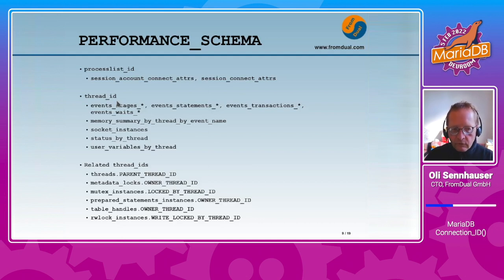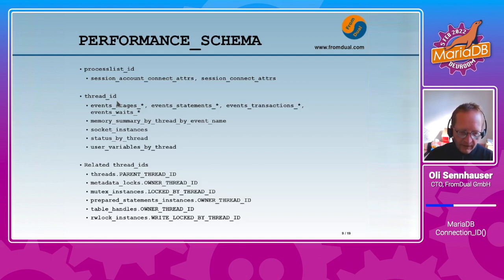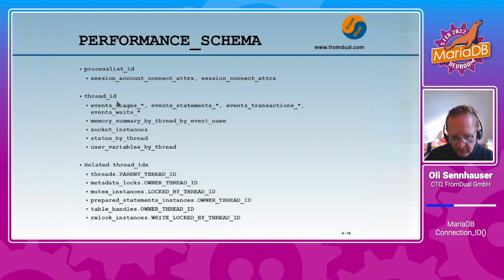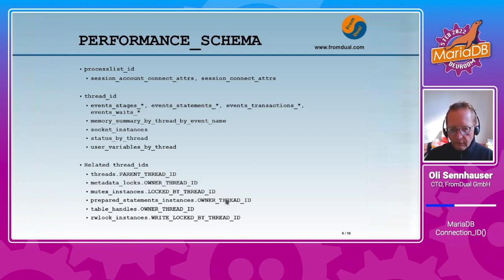There are many other views where you can only work with the real thread ID and not with the connection ID. I have listed all views here which I found where the thread ID is listed or used. And we also have related thread IDs like parent thread ID, owner thread ID, logged by thread ID, etc. in the performance schema. With the conversion from connection ID to thread ID, you can see in various views which connection or thread has done what.